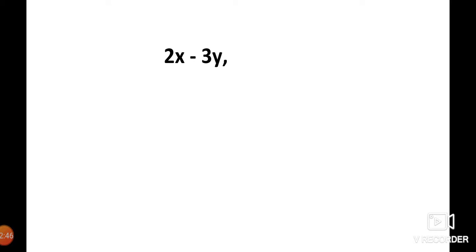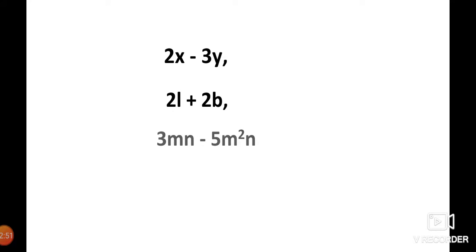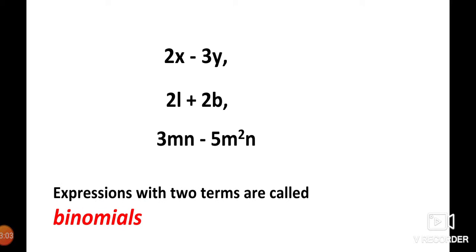See another example: 2x − 3y, 2l + 2b, and 3mn − 5m²n. In these three algebraic expressions, two terms are present. So algebraic expressions with two terms are called binomials.